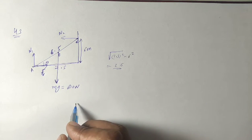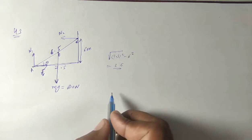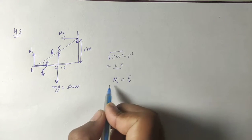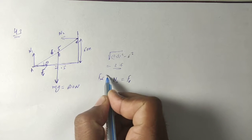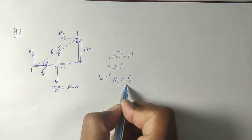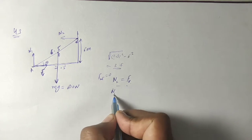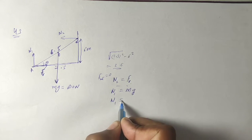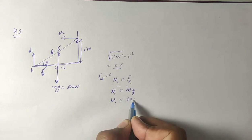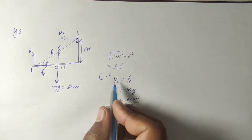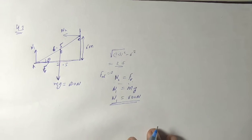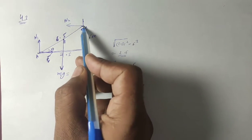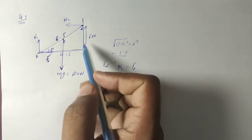We know that this system is in rest, so N2 should be equal to friction. Net force is zero — left-right forces are equal, up-down forces are equal. N1 is equal to mg, so N1 is equal to 600 Newtons. N2 is equal to friction due to mg.